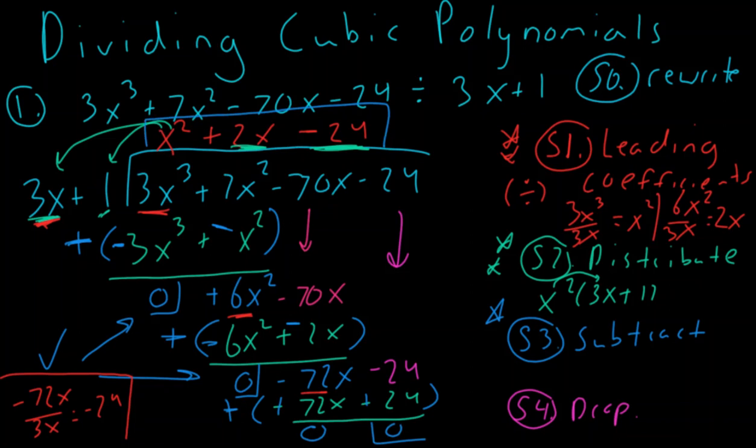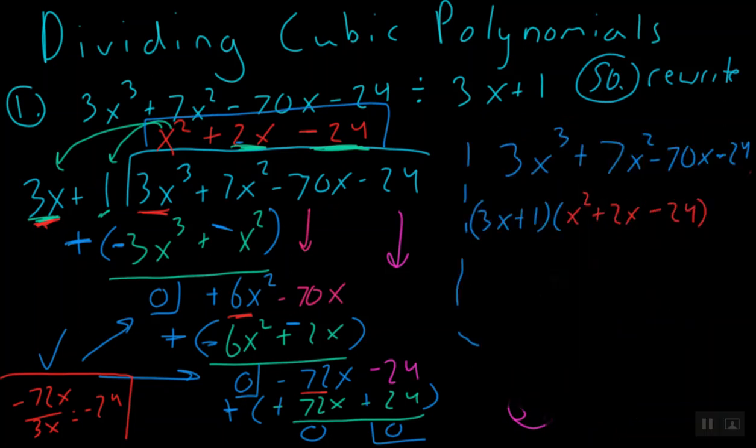It tells us that x squared plus 2x minus 24 are the leftovers once I do all this. Now I'm going to go ahead and take this one step further. And if we take this original function, the 3x cubed plus 7x squared minus 70x minus 24, and we divide it by 3x plus 1, well, you can really say that 3x cubed plus 7x squared minus 70x minus 24 is actually 3x plus 1 times x squared plus 2x minus 24. And let's actually take this one step further, because you can usually factor that remainder.